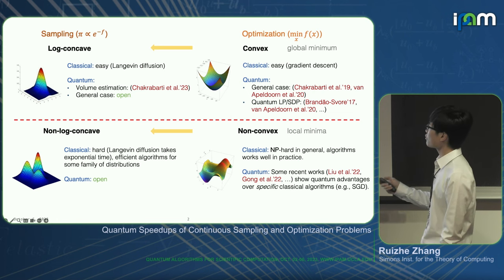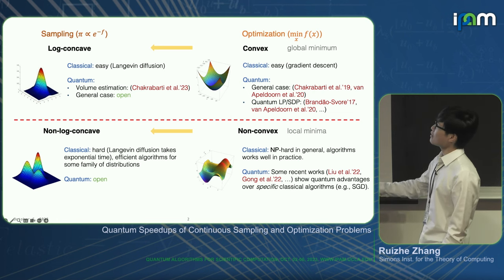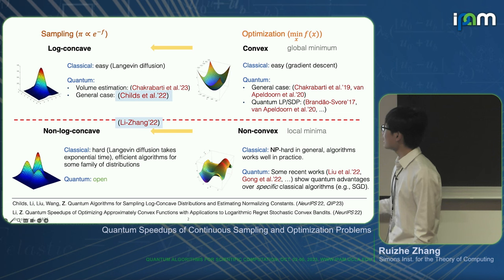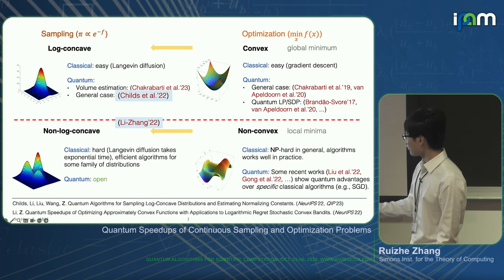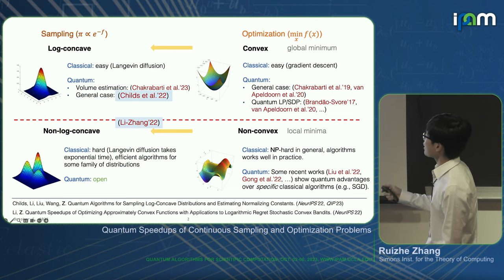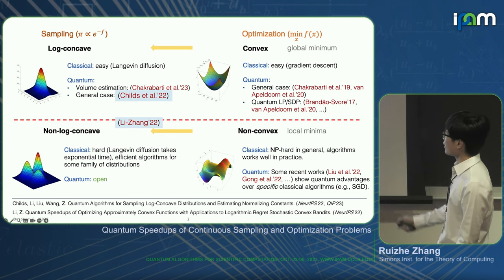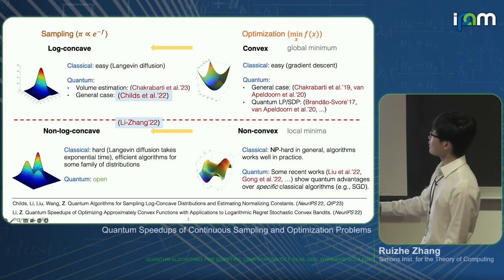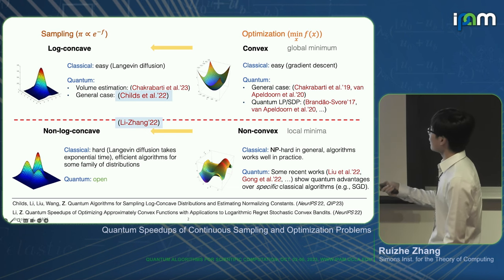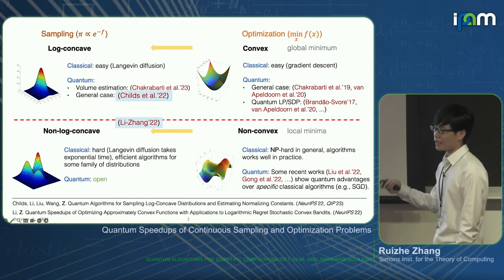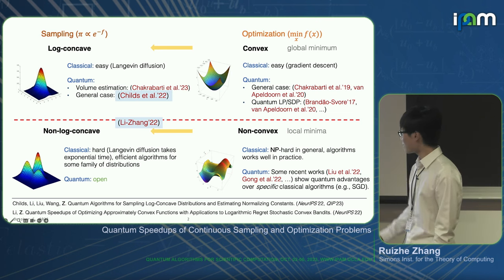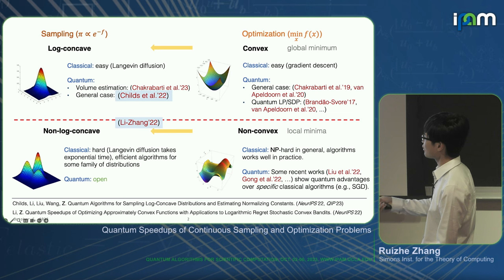The purpose of our work is to close some gaps in the sampling world. We first show a general log-concave sampling algorithm—joint work with Andrew Childs, Chongyang Li, Jinpeng Liu, and Chunhao Wang—achieving polynomial quantum speedups. We then move slightly beyond the convex regime, considering some non-convex sampling and optimization problems, and show that in this slightly non-convex regime we can still achieve quantum speedups. This second part is joint work with Chongyang Li.